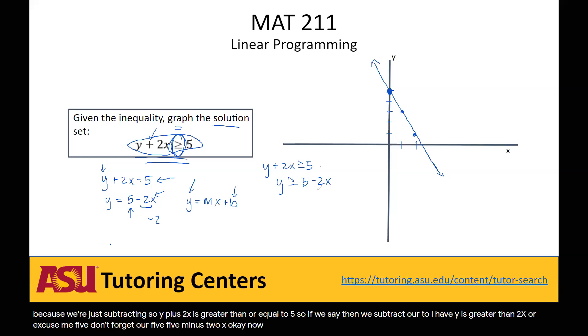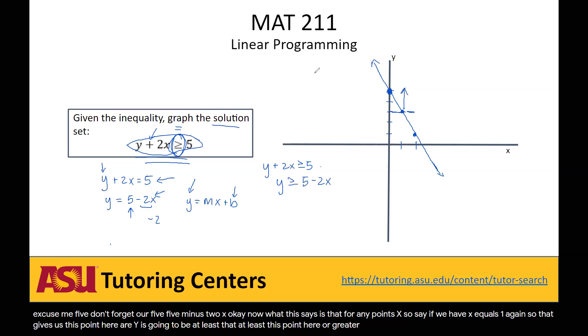Now what this says is that for any points x, so say if we have x equals 1 again, so that gives us this point here, our y is going to be at least this point here, or greater. So what that means is that our solution space is above our line.